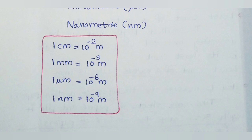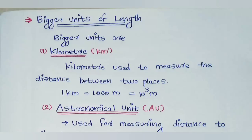We have to learn smaller units. We have already learned the bigger units. The first is the kilometer (km). 1 km equals 1000m, which is 10³ m.